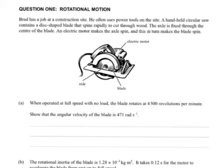Question 1. Rotational motion. Brad has a job at a construction site. He often uses power tools on the site. A handheld circular saw contains a disc-shaped blade that spins rapidly to cut through wood. The axle is fixed through the centre of the blade, and an electric motor makes the axle spin, and this in turn makes the blade spin. And we've got a lovely diagram right there.